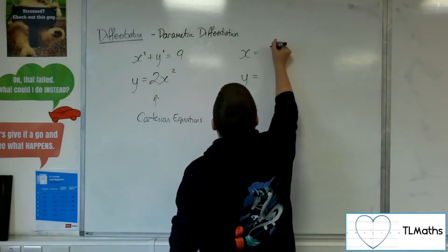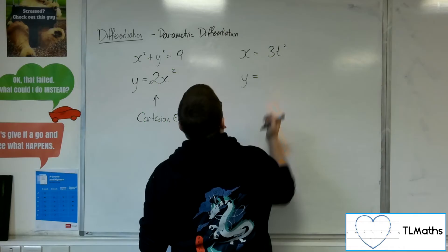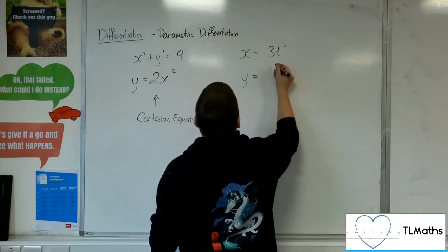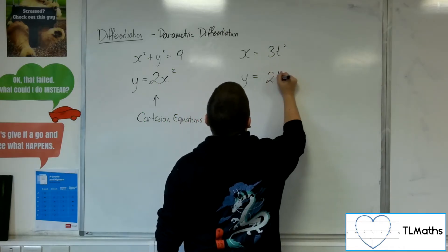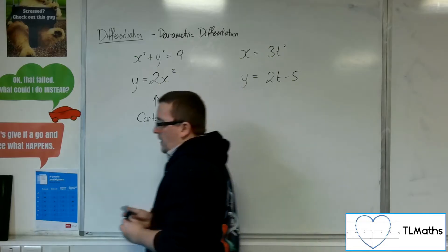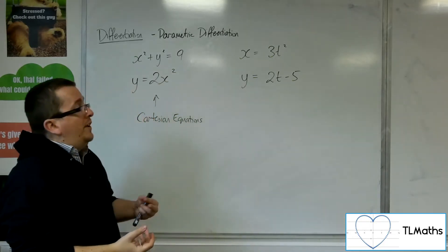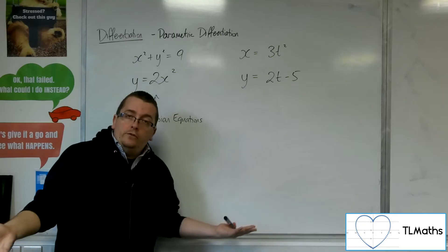So you might have one equation written as x equals 3t squared and y equals 2t minus 5. OK, now t could be representative of time, for example.